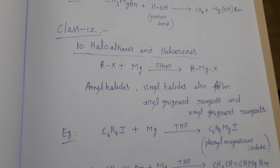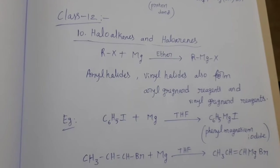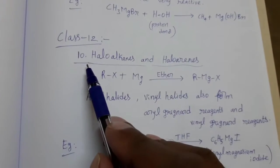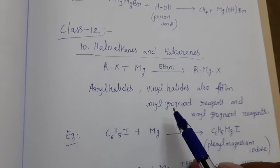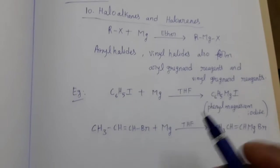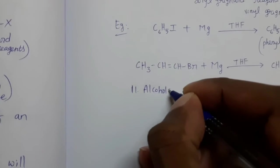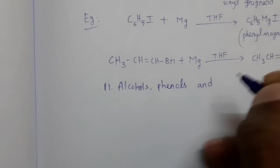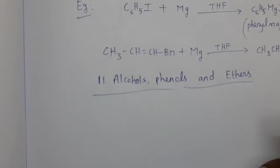Hi students, this is Viswanath, your chemistry teacher for NEET and IIT exams. In the previous video we completed Grignard reagents in Chapter 10, Haloalkanes and Haloarenes. Now in Chapter 11, Alcohols, Phenols and Ethers, we will learn about Grignard reagents.